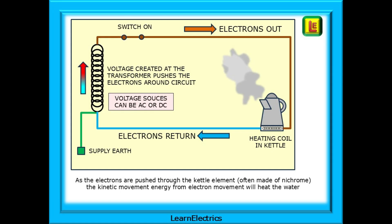A voltage is created, the switch is on, so we have continuity. Electrons will flow along the line conductor to the kettle and through the kettle heating element. As the electrons are pushed through the kettle element, the kinetic movement energy from electron movement and collisions will heat the water. The electrons leave the kettle on the neutral conductor and return to the transformer. The electrons are then pushed around the circuit again and again until the water boils and the kettle disconnects itself, at which point, with the circuit broken, the current stops flowing and the kettle stops boiling.